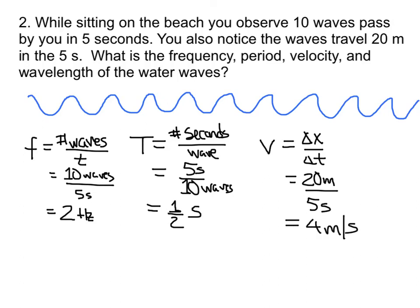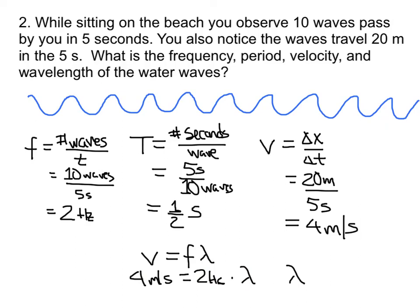The last thing we want to know is the wavelength — the distance from any crest to another crest. Using the wave equation, velocity equals frequency times wavelength: our velocity is 4 meters per second and our frequency is 2 hertz, so 2 times the wavelength equals 4 meters per second, giving a wavelength of 2 meters. Thank you for watching and see you in class.